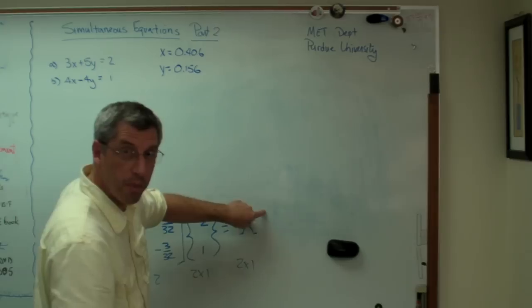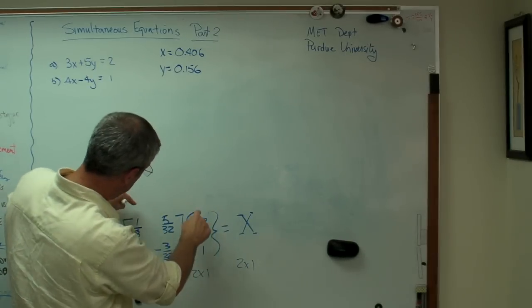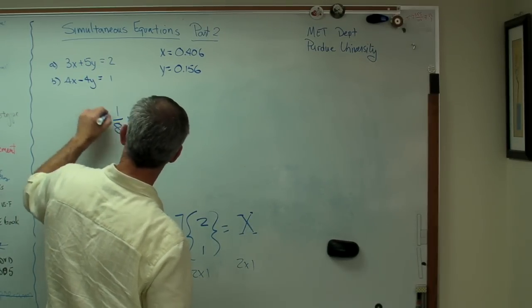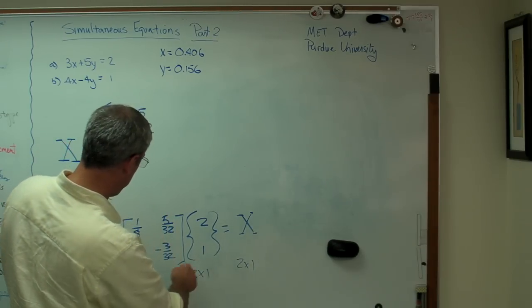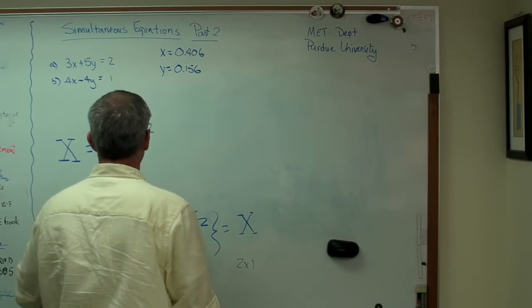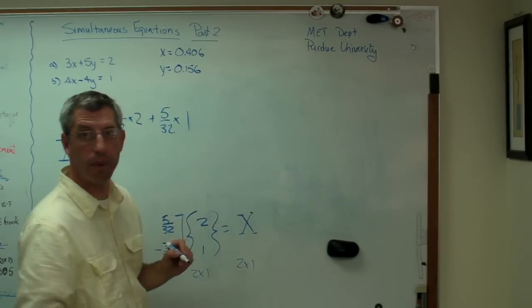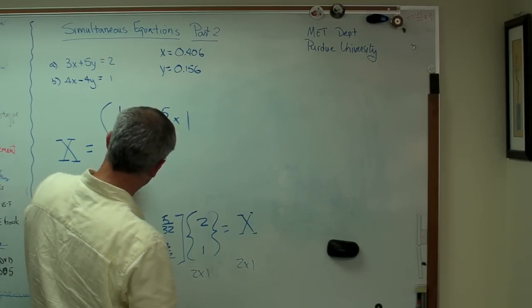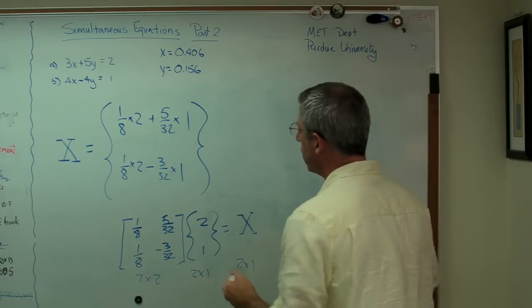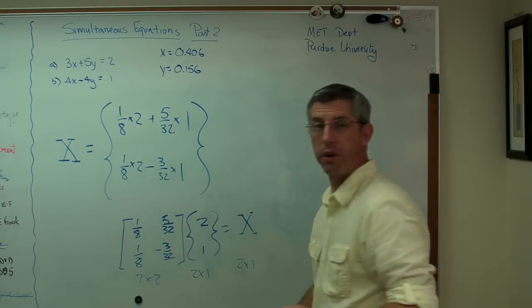Now to get the first element here, the top one, I'm going to multiply across there and down there. So I'm going to multiply that times that plus that times that. You work across here, take the product of that plus the product of the next one. So I'm going to get 1/8 times 2 plus 5/32 times 1. And the next one is going to be 1/8 times 2 minus 3/32 times 1. So across there, down there, across there, down there. So 1/8 times 2 plus 5/32, and 1/8 times 2 minus 3/32.